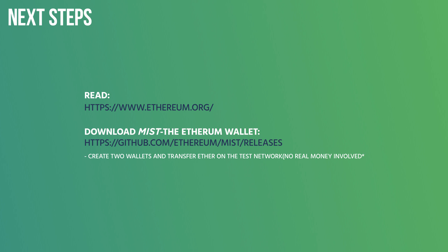As next steps, I encourage you to check out ethereum.org — this will give you a little bit of cool history and what's going on today. Then I encourage you to download the Mist Ethereum wallet. There are test networks you can use besides the main net, and once you step into this you can actually get some free Ether on the test network since there's no real value or money involved. I encourage you to try to transfer some Ethereum between two wallets using the test network.